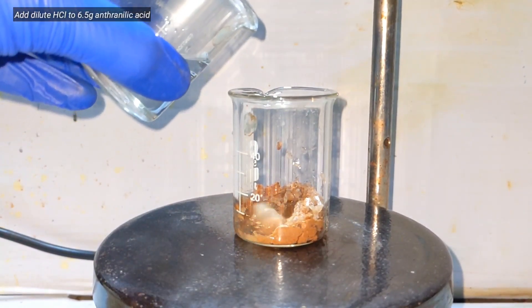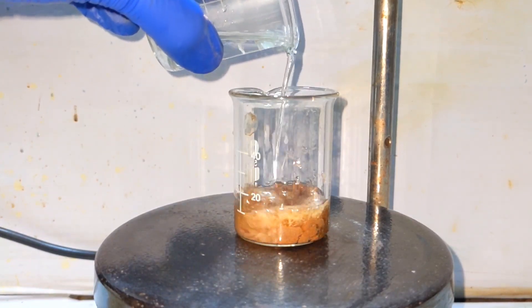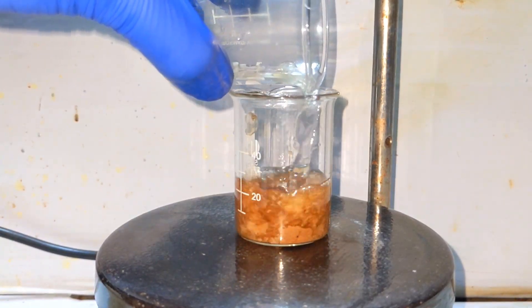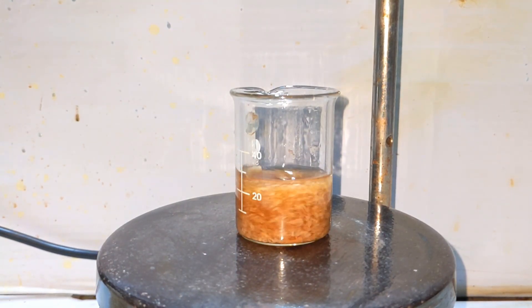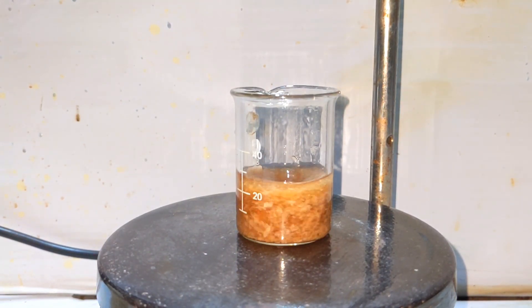We have taken 6.5 grams of anthranilic acid in this beaker along with a stirring bar and then we add the diluted hydrochloric acid solution which we had prepared previously. Anthranilic acid was synthesized in one of my previous videos. I will put a link to that in the description.